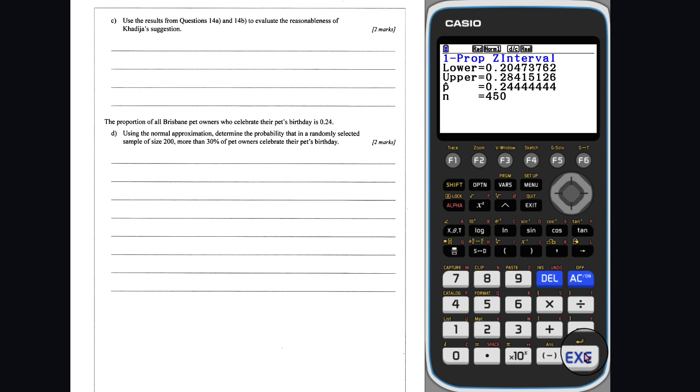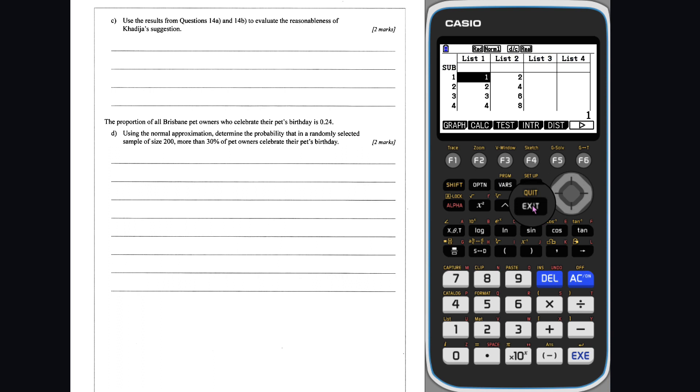Question 14 Part C: Ravi's random sample consisted of 200 pet owners. The combined samples of Kadja and Tim form one sample of 350 pet owners. As such, the confidence interval that results from the combined sample will have a smaller width than the confidence interval that results from Ravi's sample. And so, Kadja's claim is reasonable, as it results in a better estimate for population parameter P.